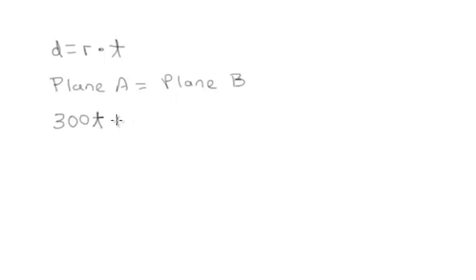But we also know that plane A is 350 miles ahead of plane B. So it's going to be 300 times time plus 350 for distance. And then plane B is just leaving the runway. And so it's 400 miles per hour times time.